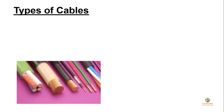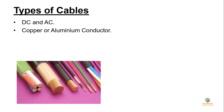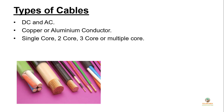Coming to the types of cable: in a solar PV system there are AC and DC cables. Based on conductor material, cables can have copper or aluminum conductors, but copper is preferred because it is more conductive than aluminum. Cables can be single core, double core, three core, or multi-core.